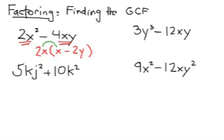You should use the distributive property. 2x times x is 2x squared. 2x times 2y is 4xy, and they share a common subtraction sign in between.